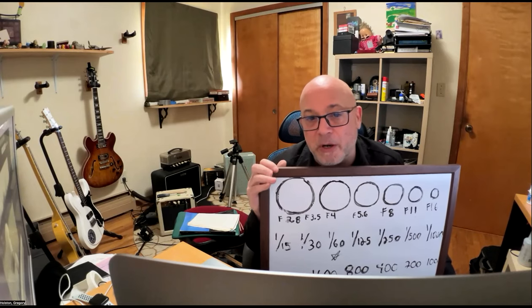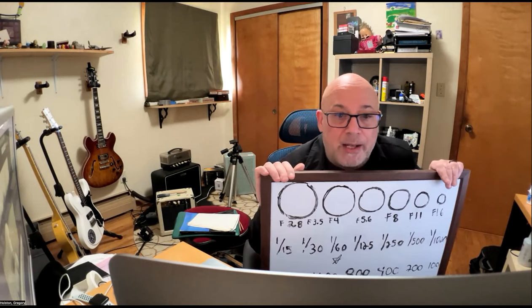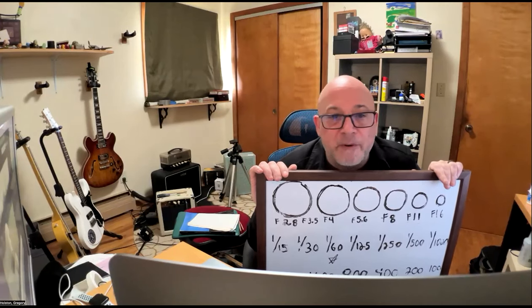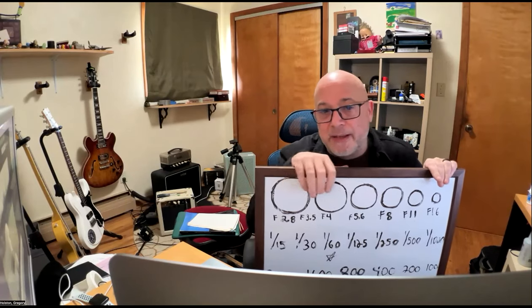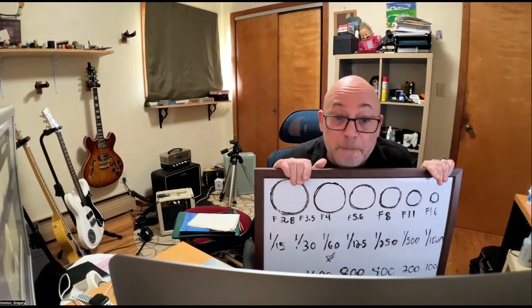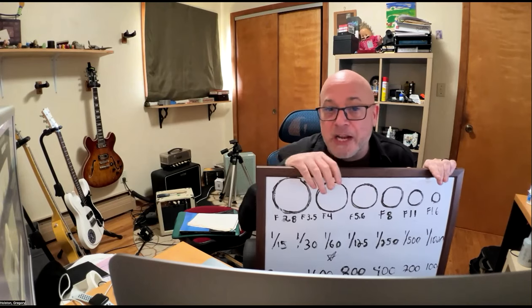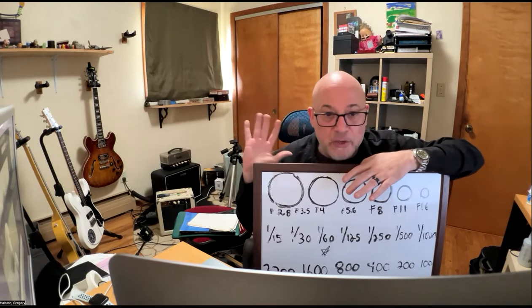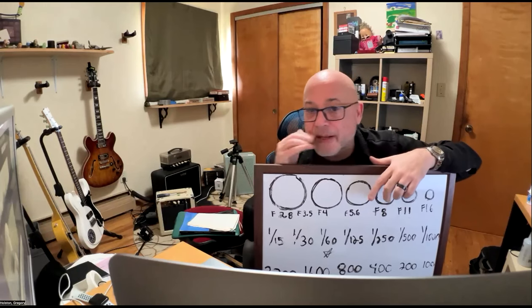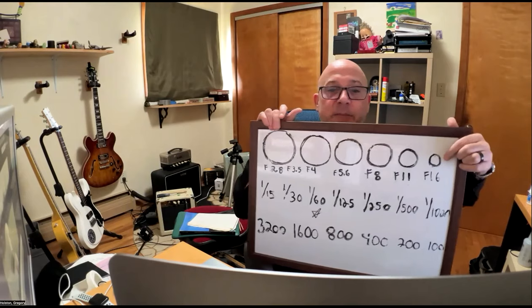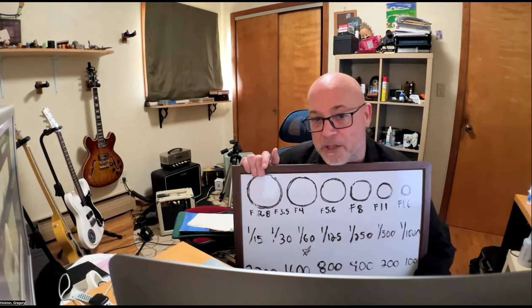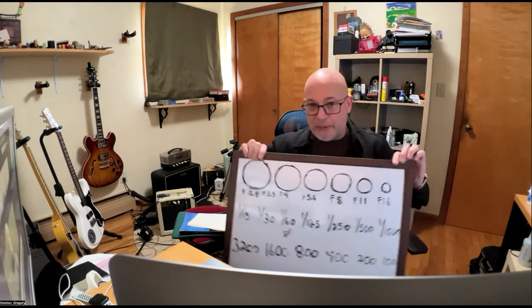Generally, you want your aperture as big as you can get most of the time. Shallow depth of field is generally a better look aesthetically. But you've got to know when to use depth of field - especially photographing groups of people where you don't want things to fall out of focus fast. Then go to f8 or f11. But when you're inside with a small aperture, you're hurting yourself badly for light.